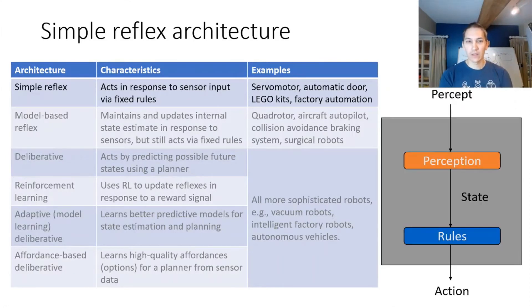The simple reflex architecture, we'll talk about just for context. This takes in the percepts. It performs some minimal processing, called perception. It then takes the representation of what the representation of the world is, the state of the robot and the environment, and then it processes that through some set of rules. Examples of simple reflex cognitive architectures could be, for example, servo motors, which simply take the readings of the encoders and drives the motor to try to reach a certain desired set point.